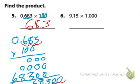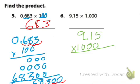Number 6, we have 9.15 times 1,000. So 0, 0, 0, bring down 0. 0 times 5 is 0, 1, 9, 2 zeros.